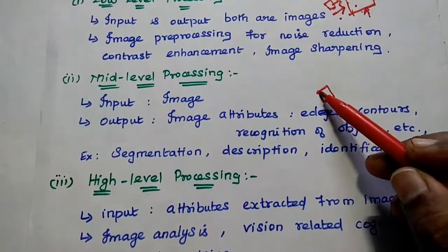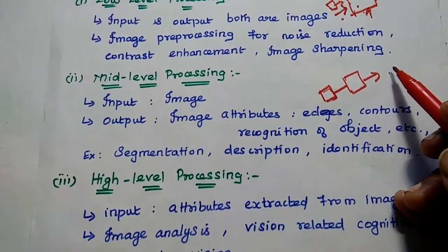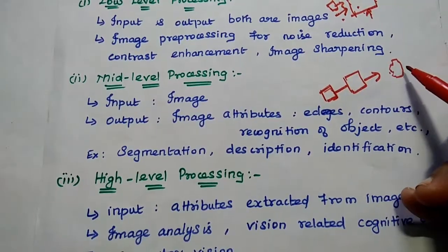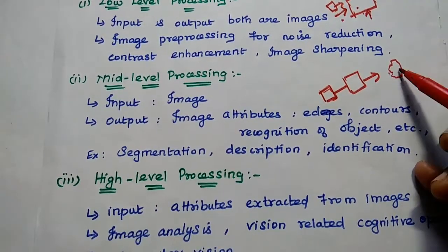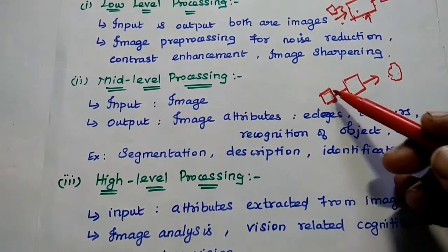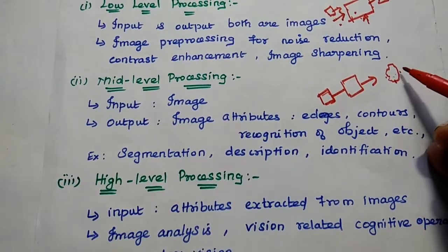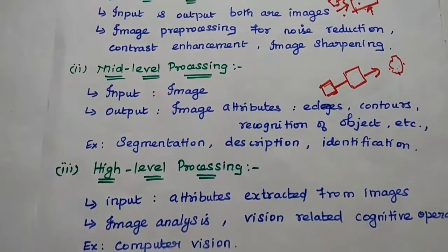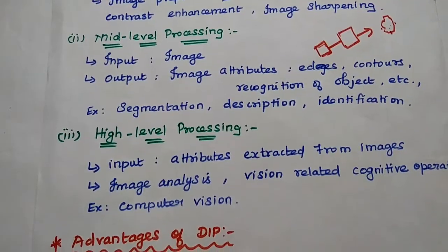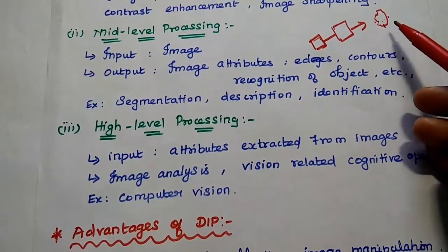Next, mid level processing. In this one, we are giving an image as input to the system and we can get the image attributes as the output. Image attributes means we can get only the edges, contours, or recognition of objects at the output side. For example, if the image contains objects like an apple, at the output side we can recognize each object separately. So in mid level processing, we can perform segmentation, description, and identification of objects — segmentation means partitioning what objects are present in the input image.